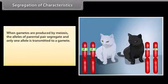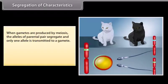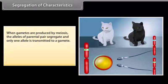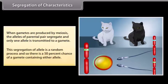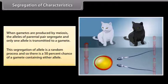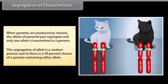Segregation of characteristics. When gametes are produced by meiosis, the alleles of parental pair segregate and only one allele is transmitted to a gamete. This segregation of alleles is a random process and so there is a 50% chance of a gamete containing either allele.